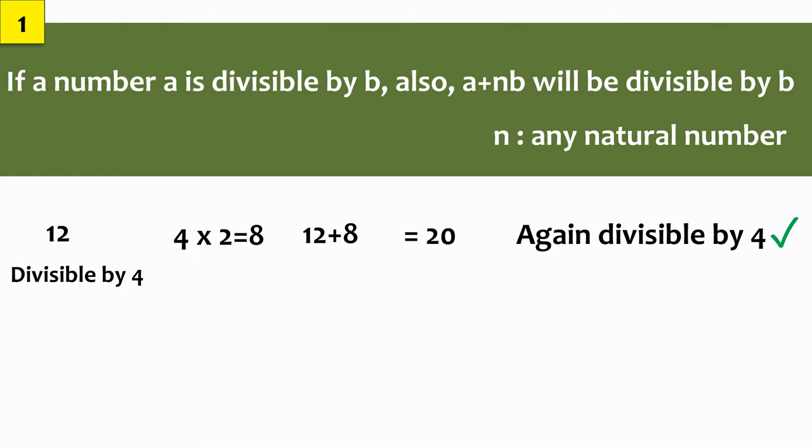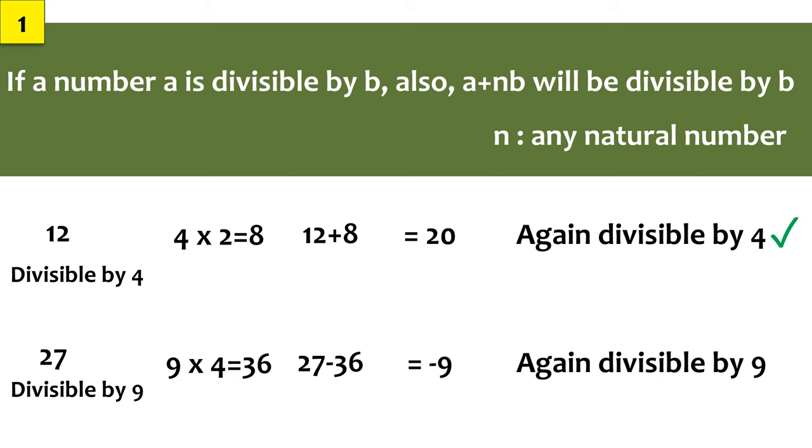For another example, let's take 27. We know it is divisible by 9. Now let's subtract 36 which is a multiple of 9 from 27 and we get minus 9 which is again divisible by 9. So we saw how the divisibility doesn't change upon doing this. Let's move on to another thing.